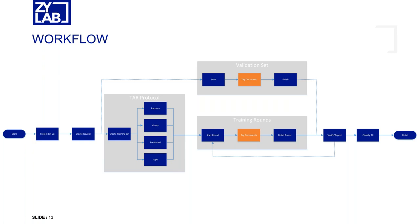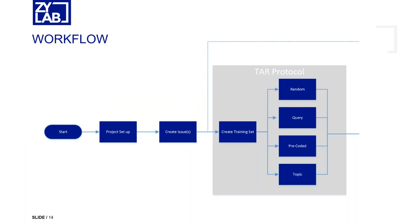For assisted review, the workflow is a bit more complex than just doing a search — there are a couple of steps in the process. We start with the project setup, where you define which documents are part of this project — it can be a complete document set or just a part of it. Then within this project we create an issue. An issue is about a certain topic, and for this issue we are going to classify documents as responsive or not responsive, teaching the computer what is a good document for this issue.